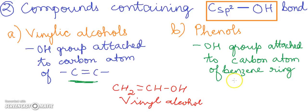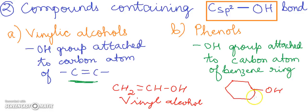In phenols, a benzene ring is present and the OH group is attached to a carbon atom of the benzene ring, with alternate double and single bonds. Today we have learnt about the classification of alcohols, phenols, and ethers — specifically the classification of alcohols. To learn more about alcohols, phenols, ethers, and other chemistry topics, like, share, and subscribe to Chemistry Class.